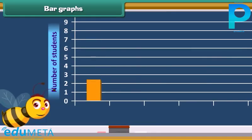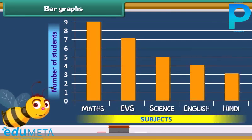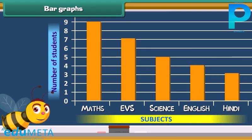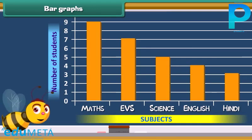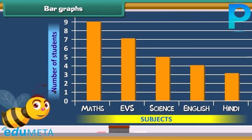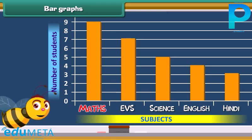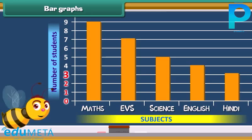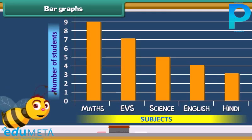The given chart is known as the bar graph. These graphs are another way of data representation. A bar graph uses bars to represent data. In the given graph, subjects are listed at the bottom and number of students is given at the side of the bar graph.